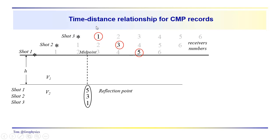So now you're probably wondering, well, what's the time distance relationship for the records in a common midpoint gather? And so we just do, we just go through, quickly go through the same kind of analysis that we did before for the records in a single shot, associated with a single shot, the travel times.